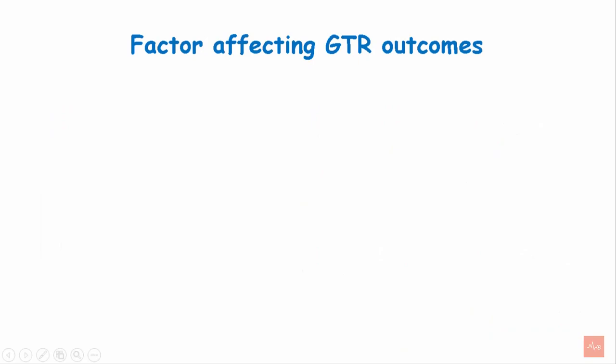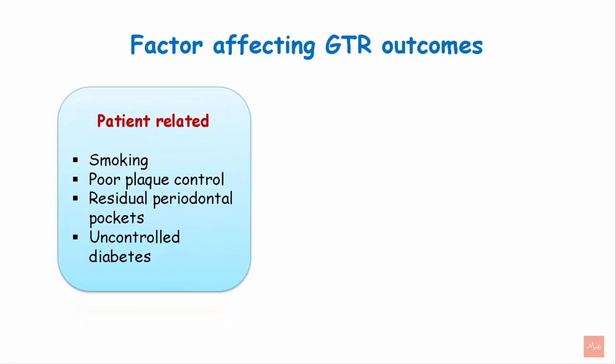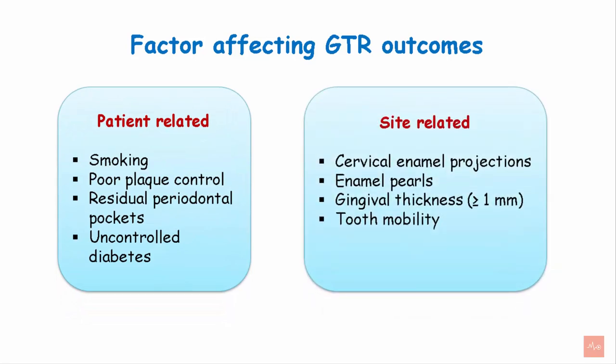Certain factors can affect the outcome of the guided tissue regeneration procedure. These are either patient-related or site-related. Smoking, poor plaque control, residual periodontal pockets, and uncontrolled diabetes can negatively affect the success of GTR. Cervical enamel projections, enamel pearls, gingival thickness less than 1 mm, and tooth mobility can also negatively affect the results of GTR.